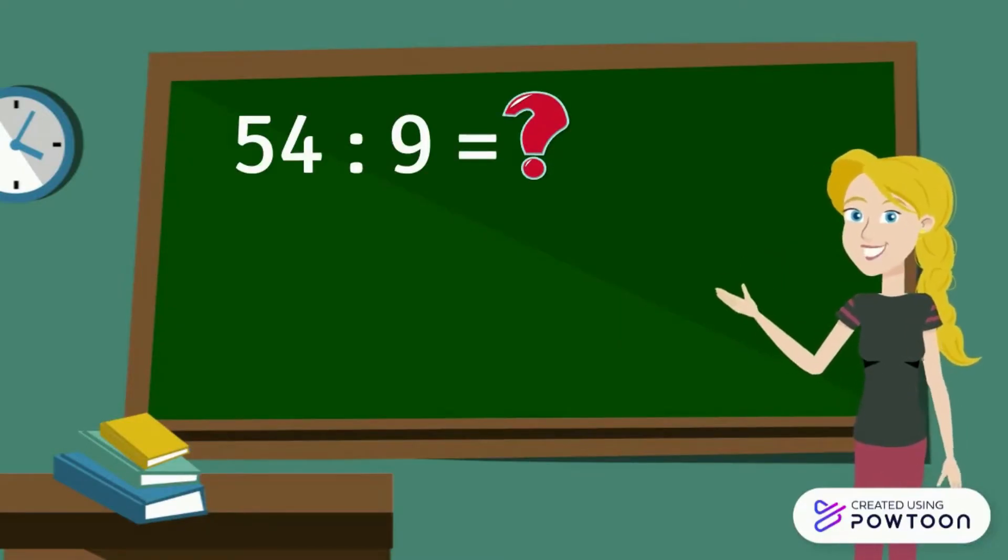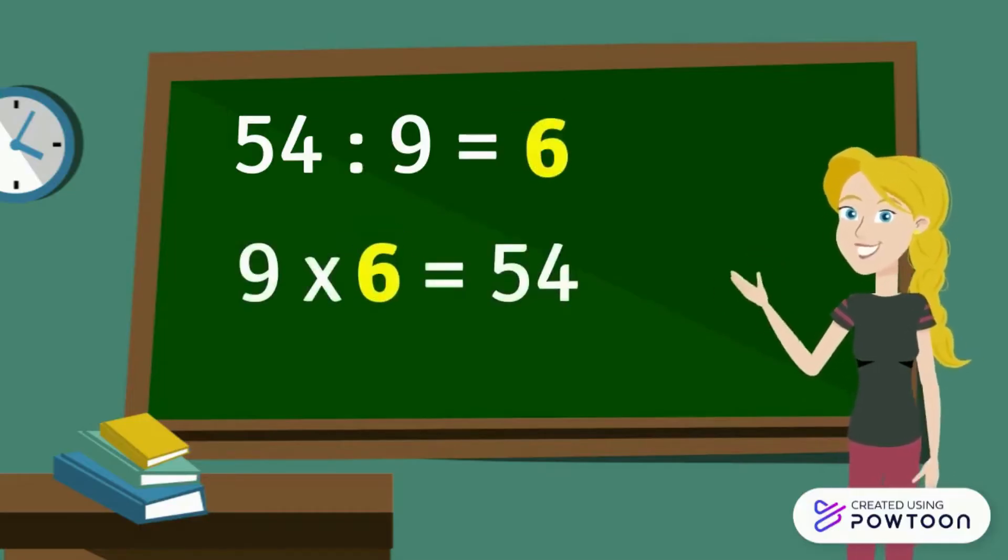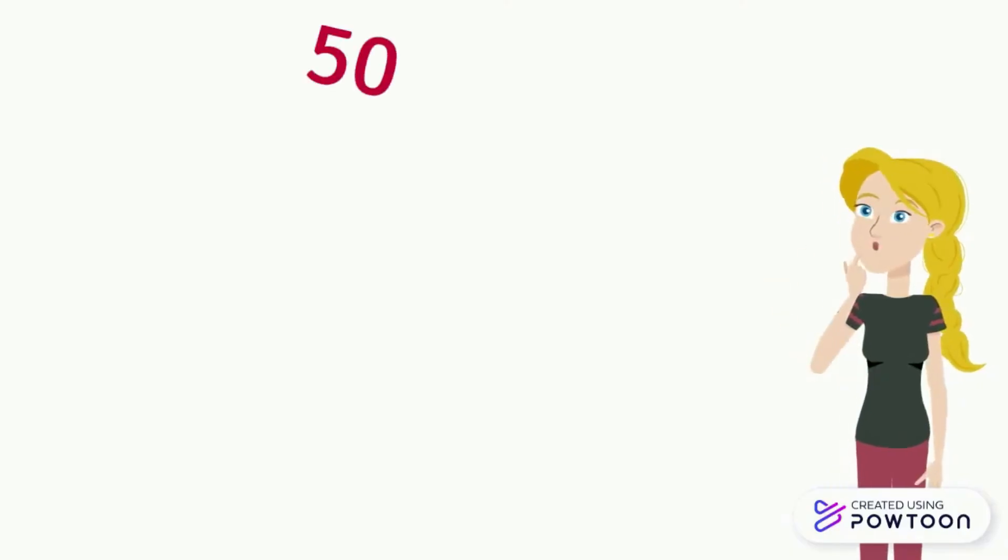By asking the question 9 times what equals 54, it is 9 times 6 equals 54, so 54 divided by 9 equals 6. But if we have a large number, how can we divide it? We use a process called long division.